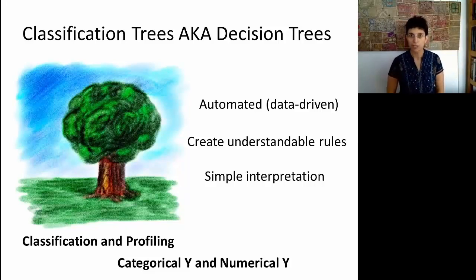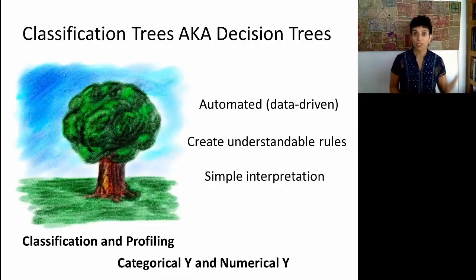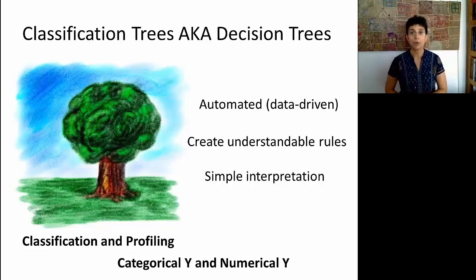So what are classification trees? First of all, they're automated and data-driven, similar to k-nearest-neighbors and naive Bayes. But in contrast to those two methods, trees create understandable rules and are therefore not black boxes. They allow us to actually understand how the inputs affect the output, and they're very easy to interpret and therefore useful for presenting to upper management.